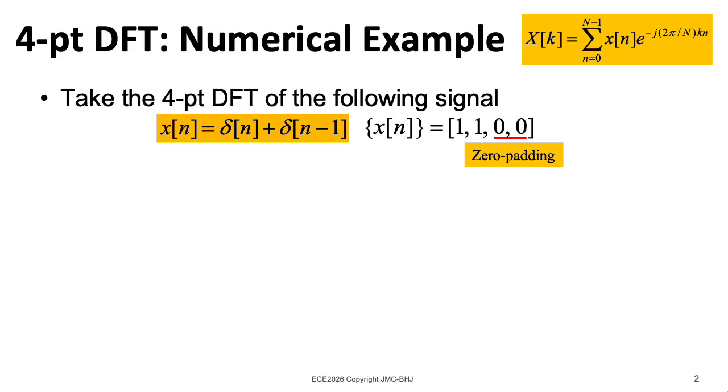Let's work through an example of computing a discrete Fourier transform. Suppose we have the signal that's just a delta at zero and a delta at one, so that signal is one, one, and we're going to take a four-point discrete Fourier transform, so we'll zero-pad that signal and add a couple of zeros at the end. We'll talk about the consequences of different sorts of zero-padding later. We need to take this sequence and plug it into this expression.